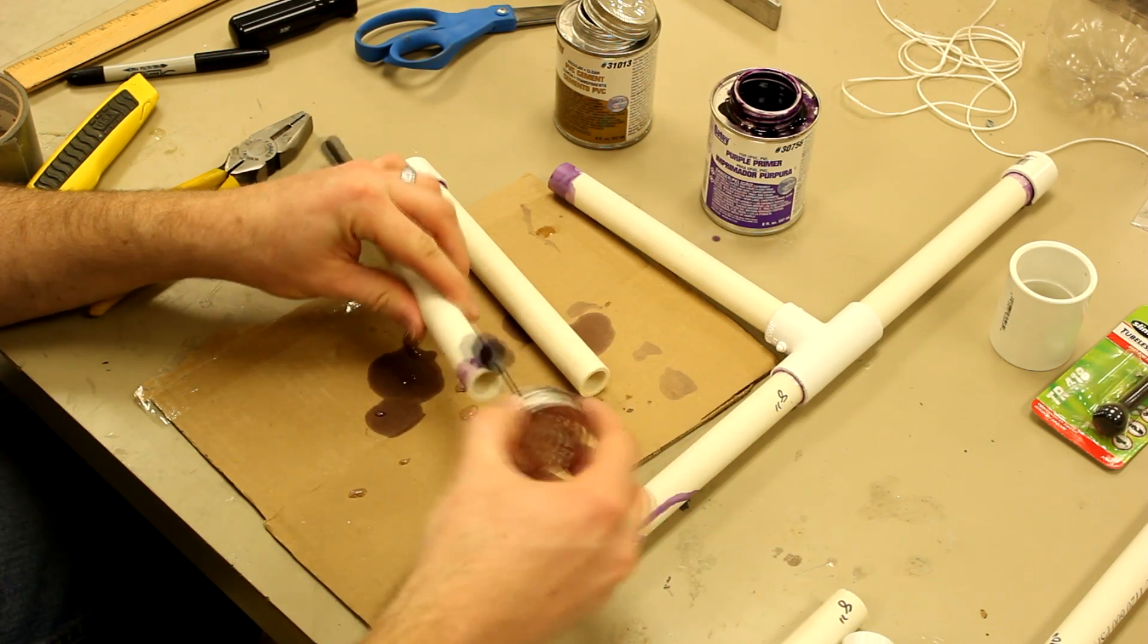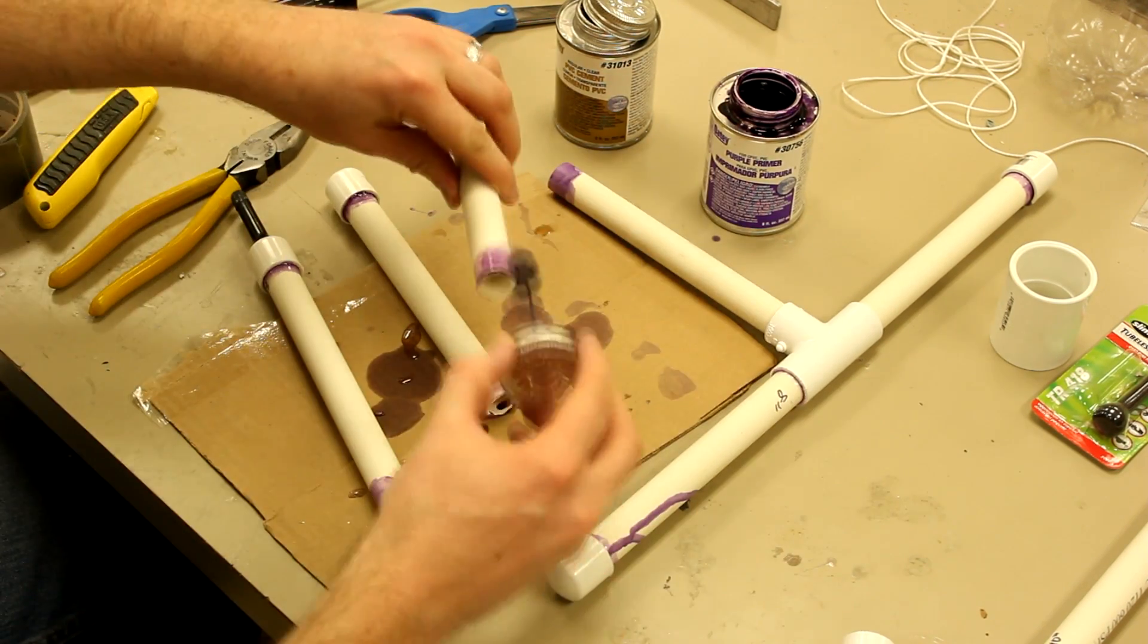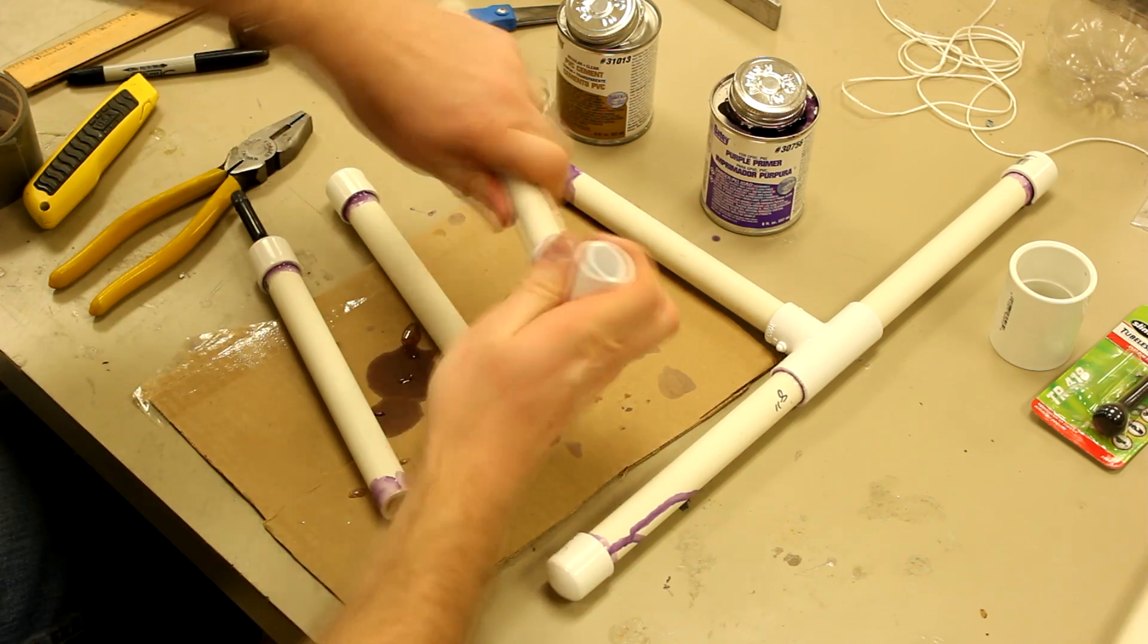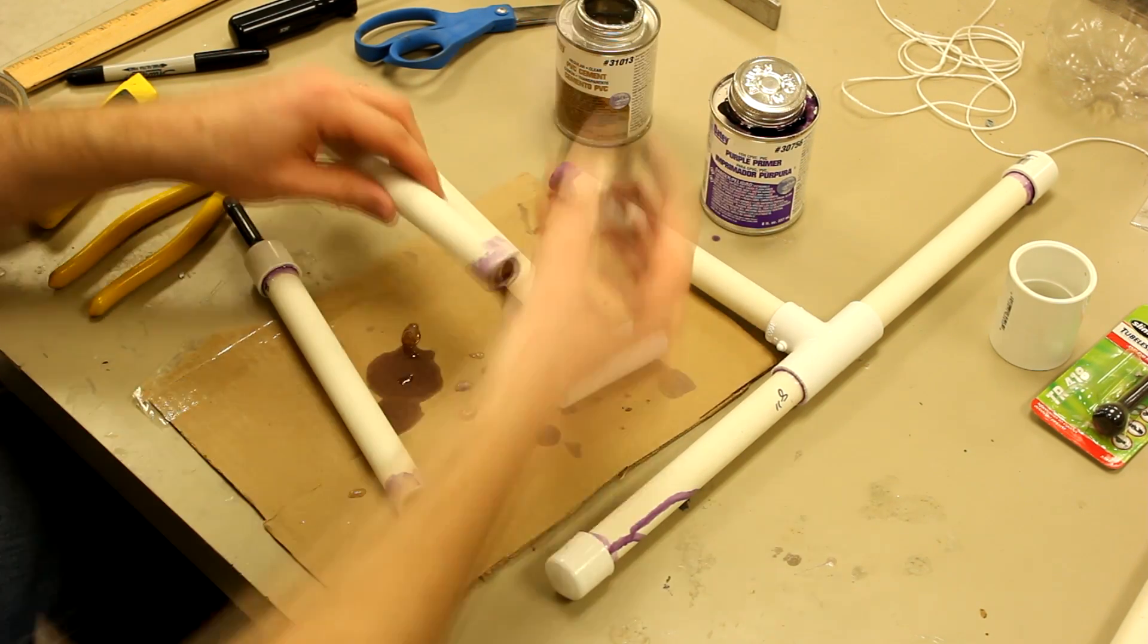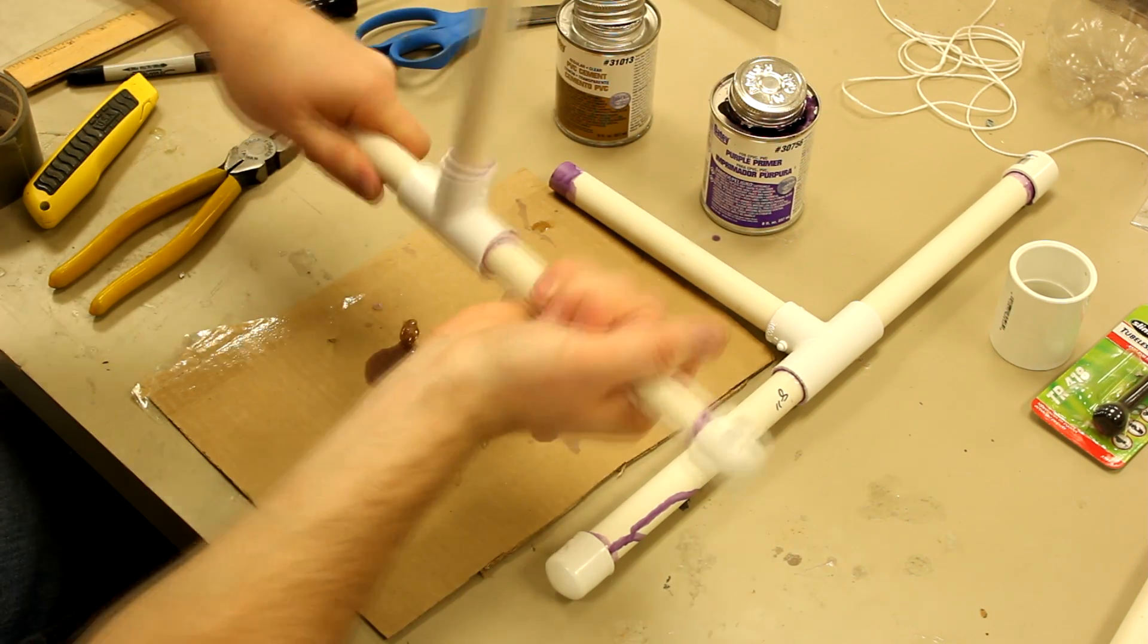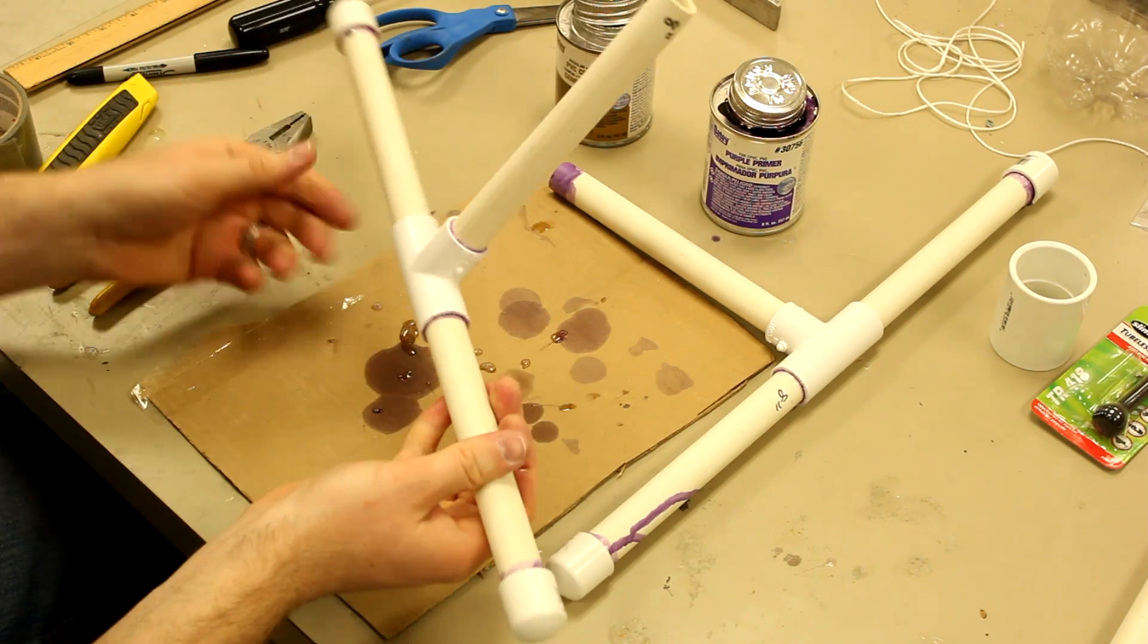And then last, we'll glue a T between these two pieces as we did over here. And put an additional piece in that T. And that's how you make your two T sections.